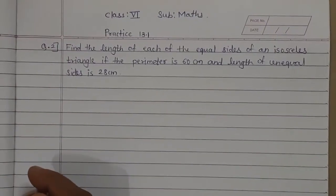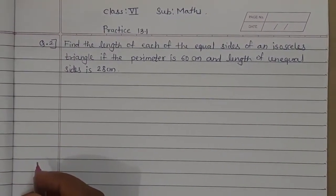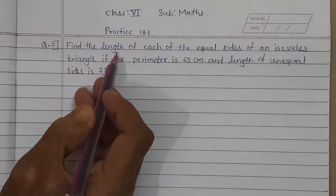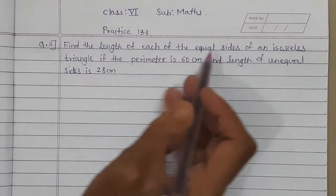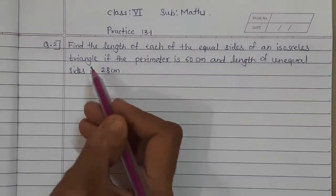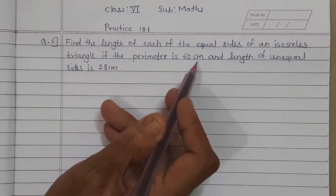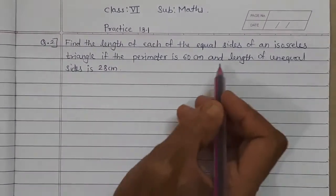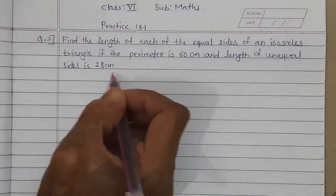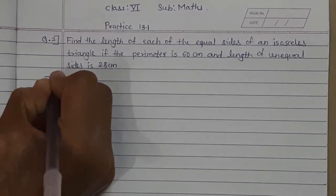Good morning students. Let's all today practice 13.1 question number 2: Find the length of each of the equal sides of an isosceles triangle if the perimeter is 60 cm and the length of the unequal side is 28 cm. Now what is given?